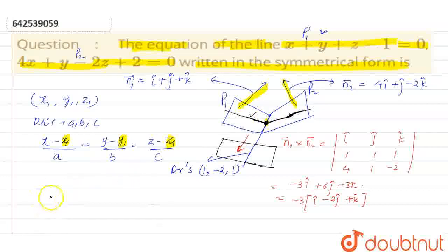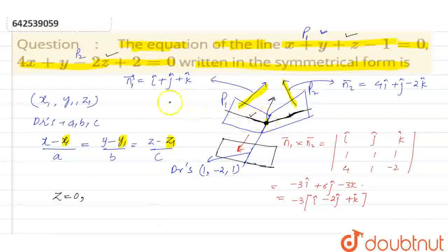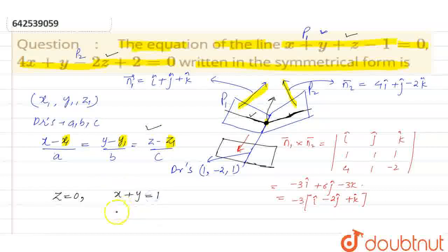So what we will do is substitute z is equal to 0 in both of these two plane equations. We will get two linear equations in x and y in such a manner that we will get the required point. By putting z is equal to 0, we get: x plus y equals 1, and 4x plus y equals minus 2.